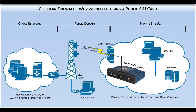As pictured here, an external host named HackerGuy saw your cellular IP address pass through the public domain. He may attempt to connect to the Orbit via SSH to take control. How can you prevent outsiders from attacking the network? The firewall. Ultimately, the Orbit's firewall functions to protect your networks and manage what data is allowed to pass in and out of the Orbit.